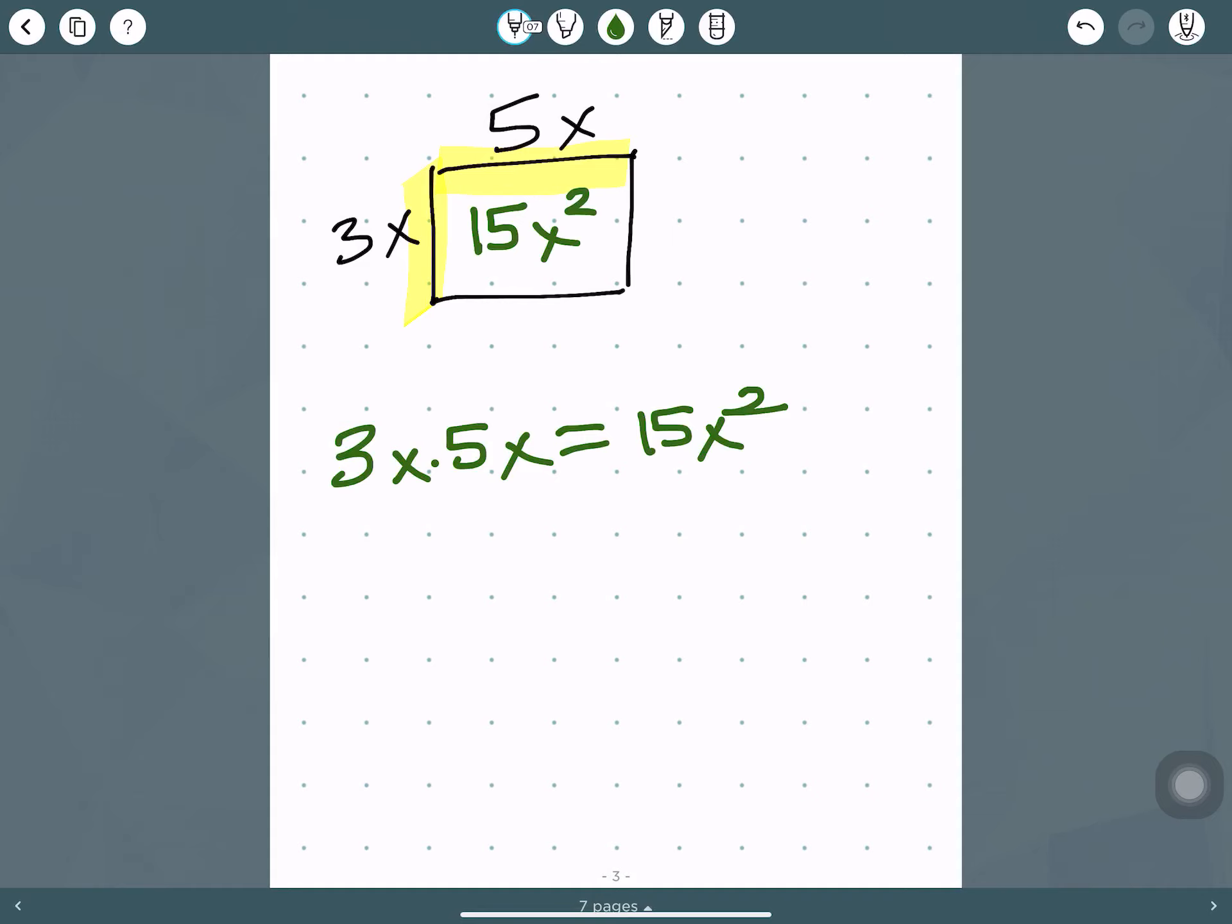But what if we wanted to extend the length by 4, and we wanted to extend the width by 2. If we wanted to find the total area, we have three more spaces that we need to find the area for.